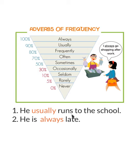Let's take examples from the textbook. First: 'He usually runs to school.' Here, 'runs' is the verb and 'usually' indicates how often he runs. Second: 'He is always late.' The word 'always' indicates how often he is late — he is always late.